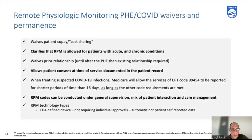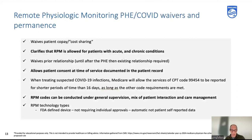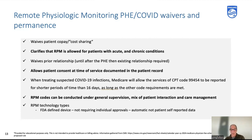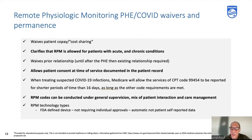Spending a little time on the post-PHE landscape since the public health emergency has ended. For RPM specifically: CMS has made permanent that RPM is allowed for patients with acute and chronic conditions. The waiver of prior patient relationship requirement has ended — no longer in place. CMS did make permanent that patient consent at time of service documented in the patient record is sufficient — that is now permanent and standalone.